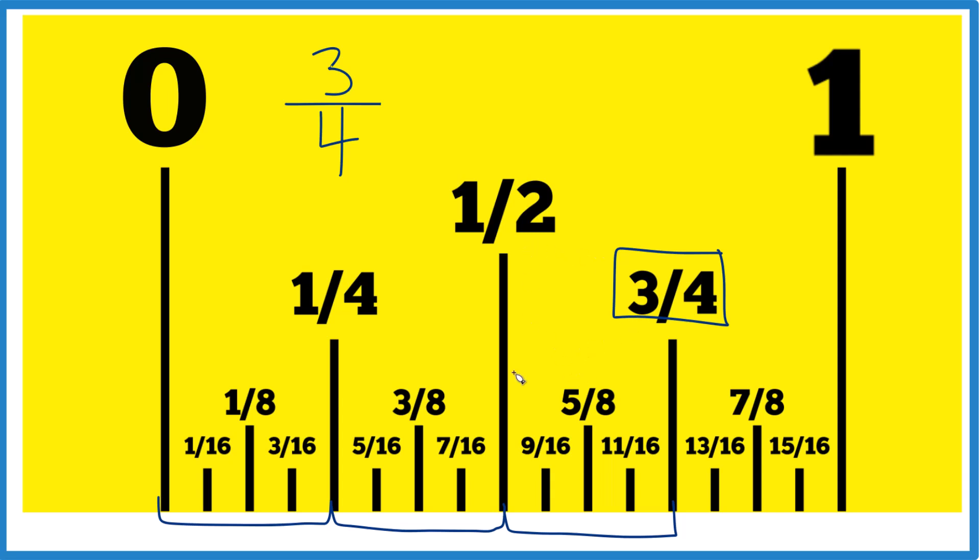What's probably going to be easier for us to do is to think in eighths. So three-fourths, we have one, two, three, four, five, six-eighths. So we can just take three of them, and right there, that's going to be three-eighths. So half of three-fourths equals three-eighths. And you can see these distances here are equal.